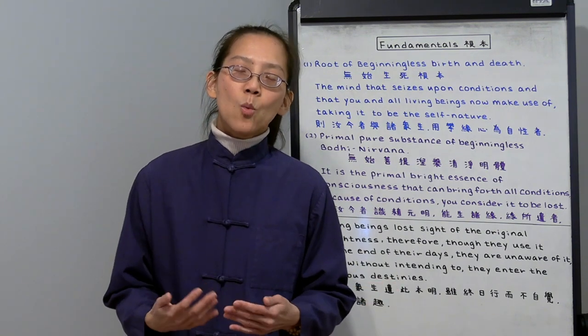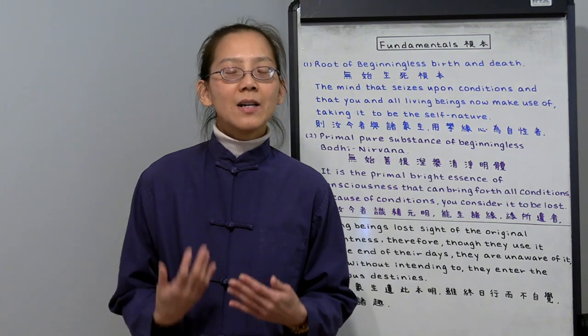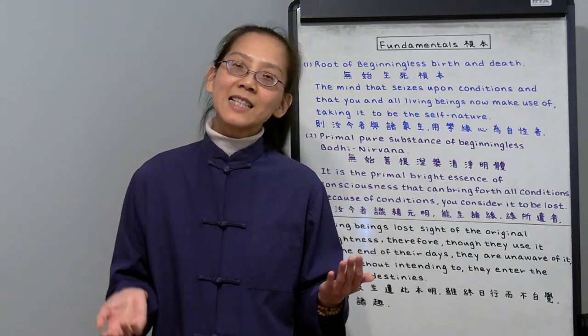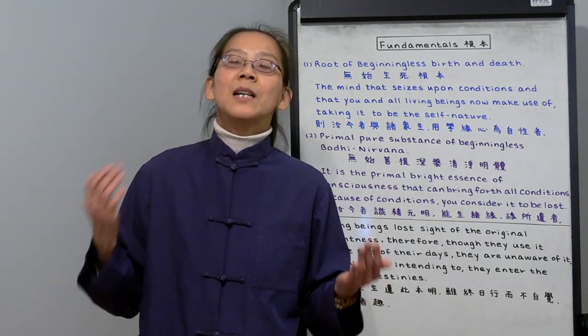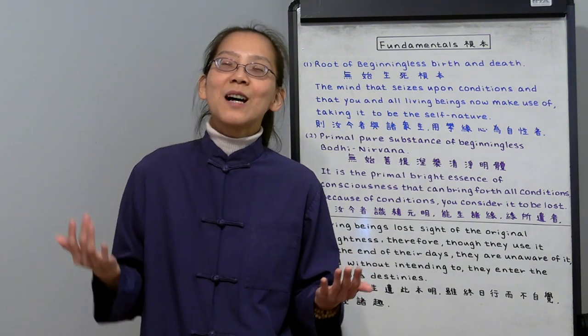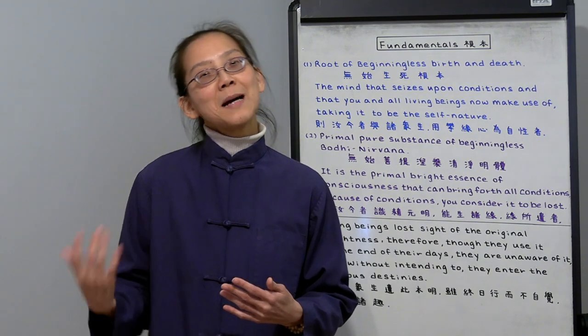Buddha asked Ananda, why did you become a monk? Ananda replied very honestly, because I saw your 32 characteristics of greatness, which was supremely wonderful. The entire body had a shimmering transparency just like that of crystals.